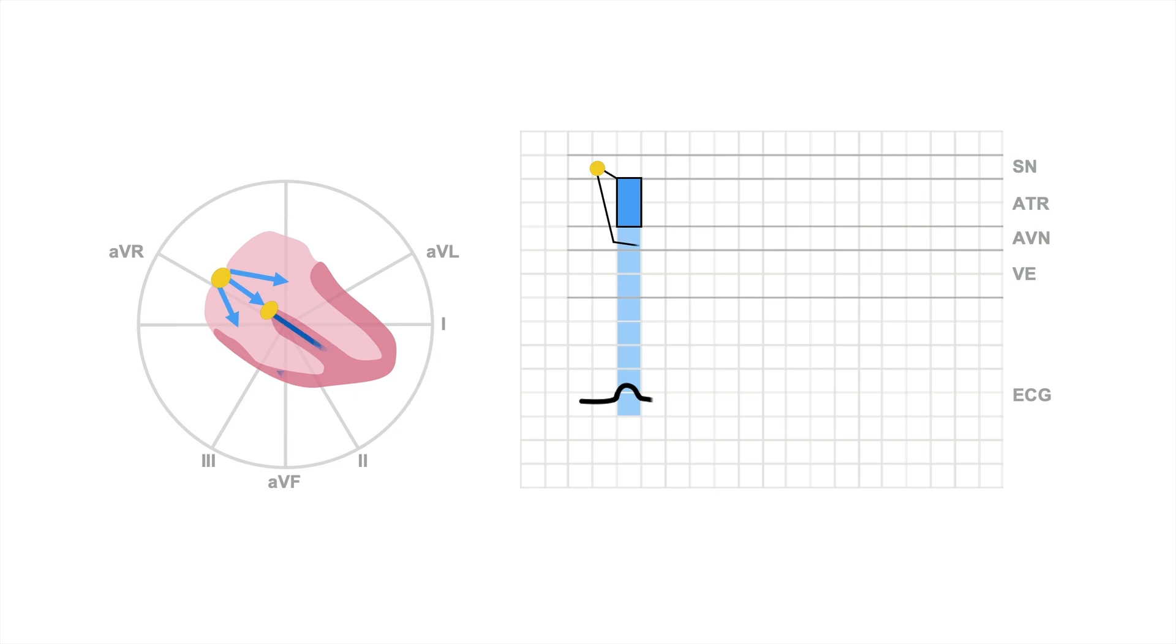Then the impulse travels through the AV node down to the ventricles and causes ventricular depolarization depicted by the red box here and by the QRS complex on the ECG. And then the cycle starts all over again.